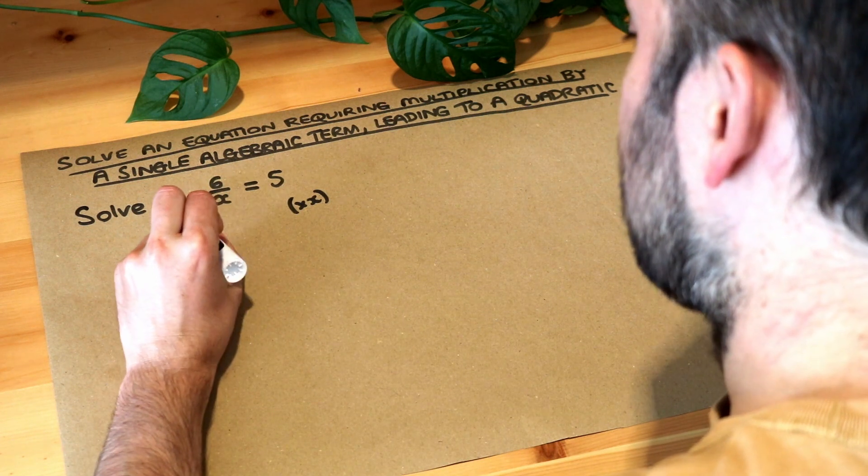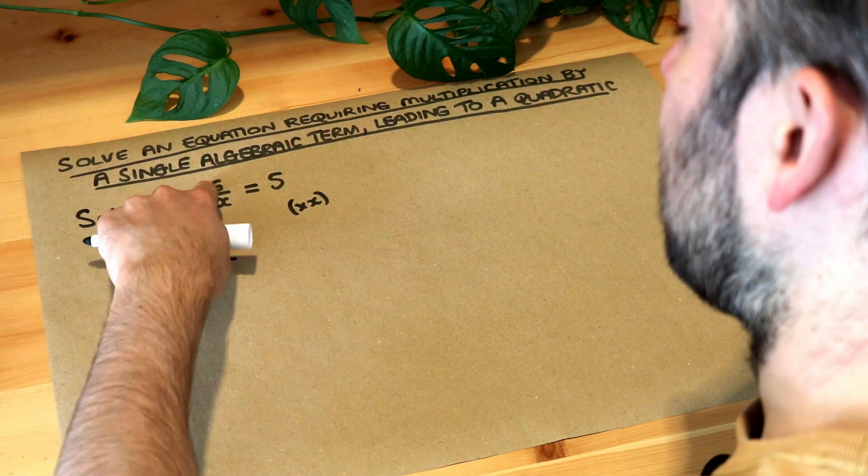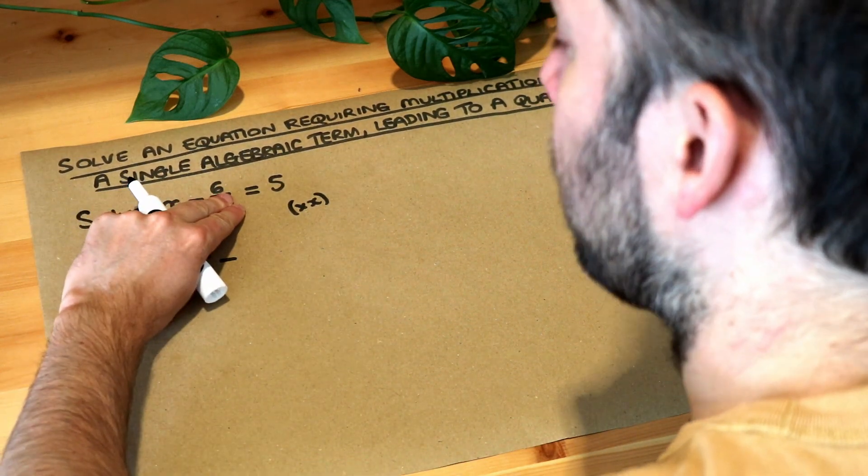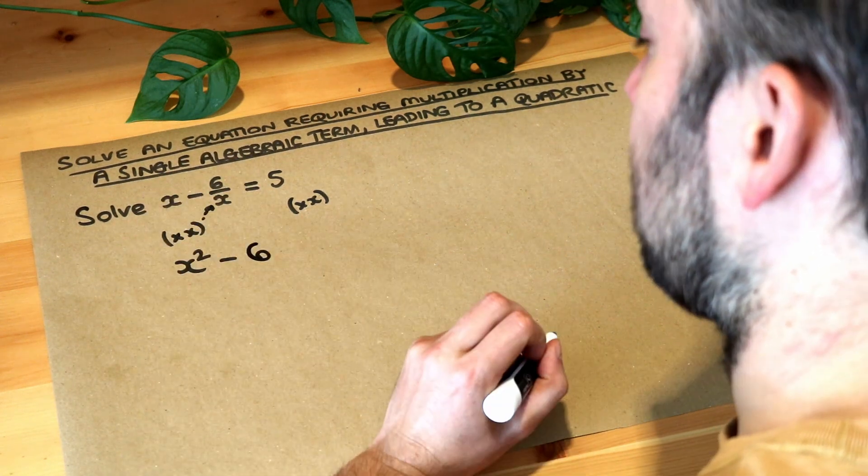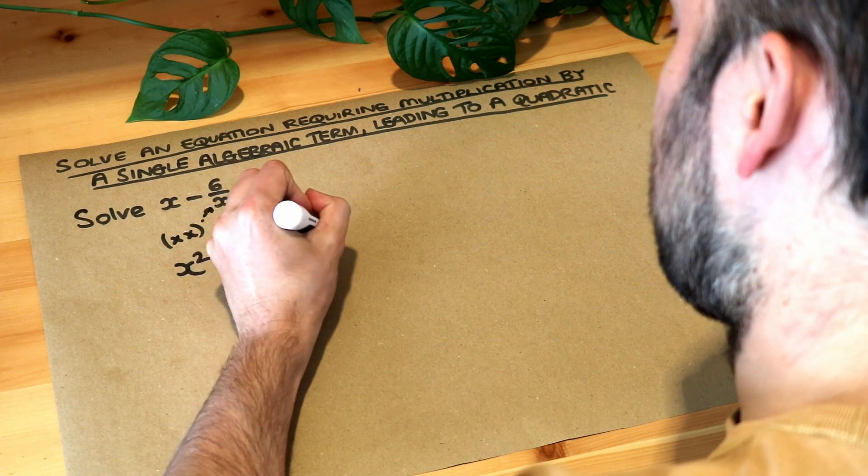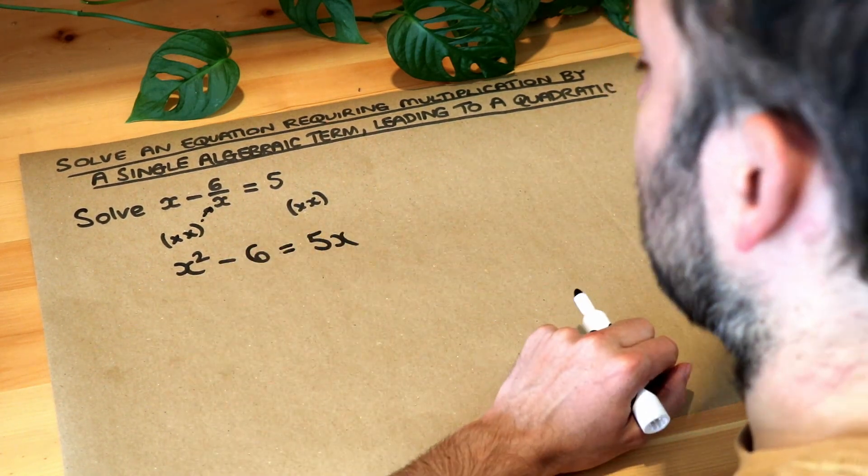So let's times everything by x. x times by x is just x squared, then 6 over x, if you times it by x, it cancels out that over x and you're just left with 6, and the 5 we also need to times by x and we just get 5x. So now we've got an equation which doesn't have any fractions in it.